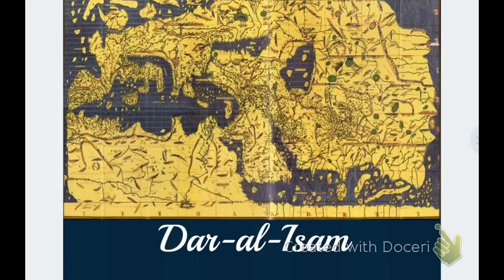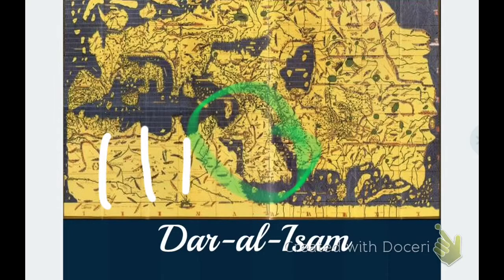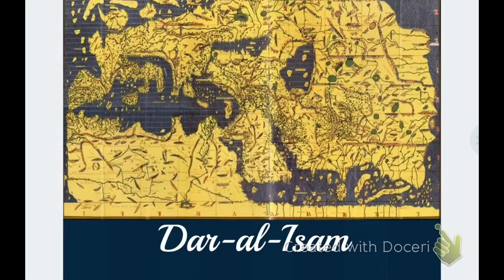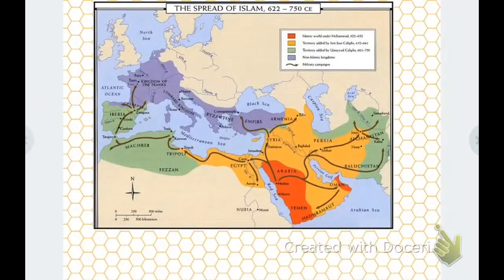Here we are looking at Dar al-Islam. This is an old map made during the post-classical era — it's a bit skewed. You can see the Arabian Peninsula, Trans-Saharan trade routes running through Africa, Europe over here, and then the Silk Roads going into East and South Asia.